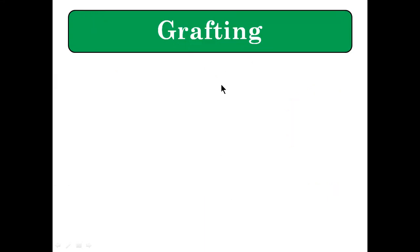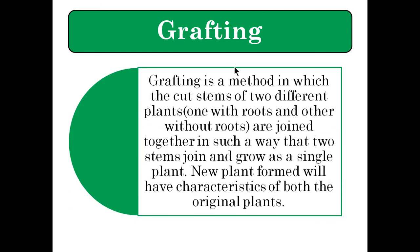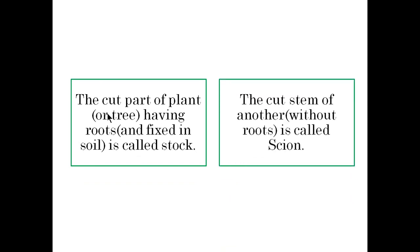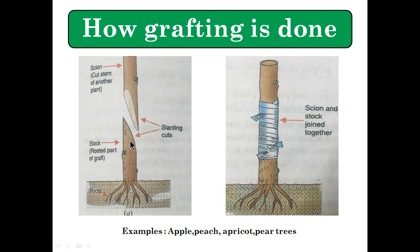The third method is grafting, which is an important method of artificial vegetative propagation. Two stems are taken from two different plants — one with roots and one without roots — and then joined together to grow as a single plant. The new plant formed will have the characteristics of both the original plants. The stem with roots fixed in the soil is called the stock, and the stem to be grafted onto it is called the scion.